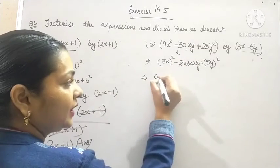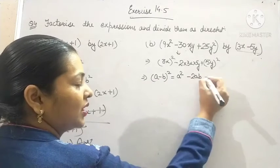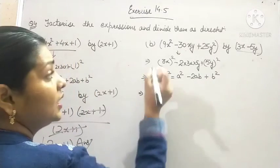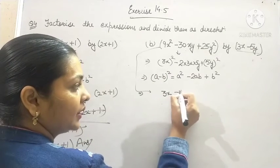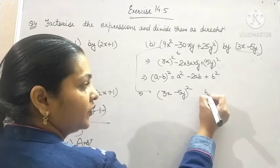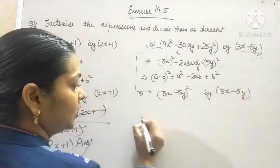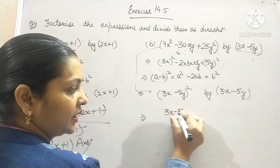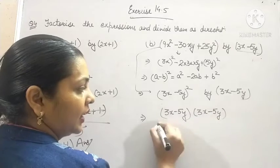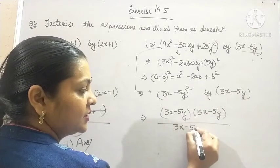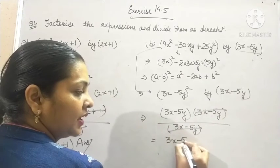So, what identity can be used? a minus b whole square will be equal to a square minus 2ab plus b square. Now, we obtain it as 3x minus 5y whole square which is to be divided by 3x minus 5y. It can be written as 3x minus 5y into 3x minus 5y. And we need to divide it by 3x minus 5y. The final answer will be 3x minus 5y.